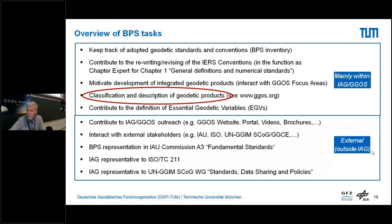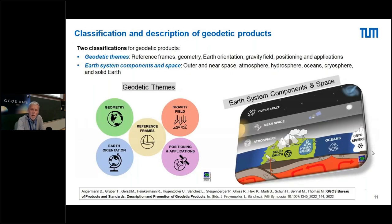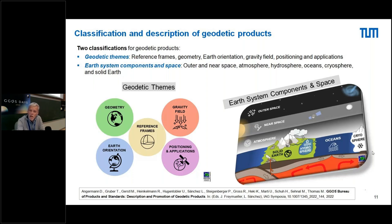Now I have a few slides related to the classification and description of geodetic products, which was a key activity during the last two years. We did two different classifications: the first is according to geodetic themes, which is a classical geodetic view very similar to the structure of the IAG; the second classification is according to earth system components and space, which I think could be a more logical or attractive entry point for non-geodetic users who want to get more information about geodetic products related to different earth system components.